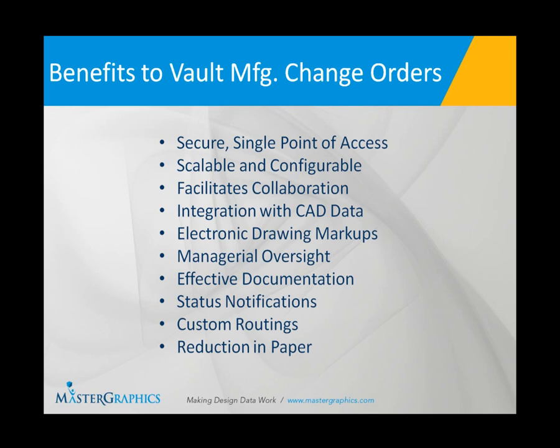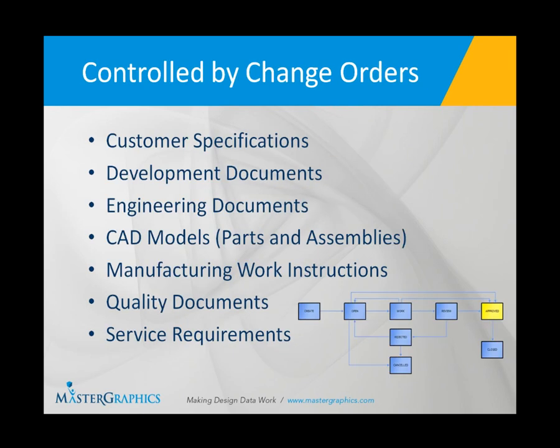Those are some of the benefits that can be achieved through Vault Manufacturing. What types of things can you control via change order? You might have customer specifications, development documents, engineering documents — those can be drawings, Word documents, or Excel files. There are also CAD models: parts, assemblies, and all those relationships. There could also be manufacturing work instructions, quality documents, and service requirements. All these types of things can be managed by a change order.